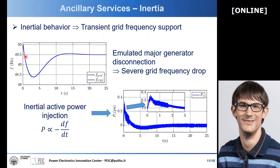Here you can see what the inertial effect means with experimental results. This is a test we ran in our lab where we emulated a frequency event with a grid emulator — for example, this can happen when a very large generating plant trips. The VSG response is proportional to the opposite of the frequency derivative, which is exactly the inertial effect, and as you can see, this is exactly what would happen with a real synchronous generator. The goal is to raise the frequency nadir and reduce the frequency derivative, thereby avoiding blackouts or unwanted triggering of frequency protection devices.